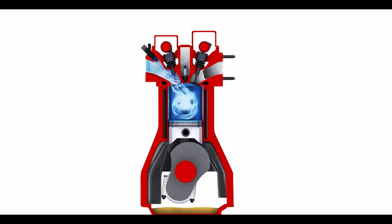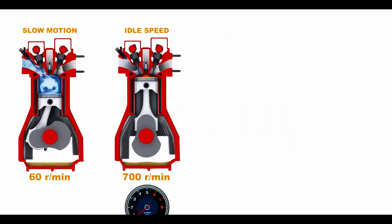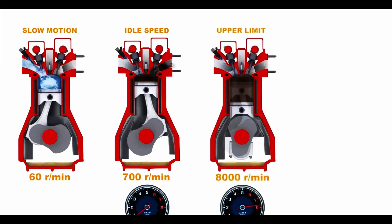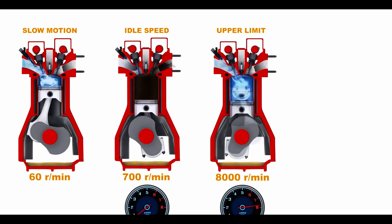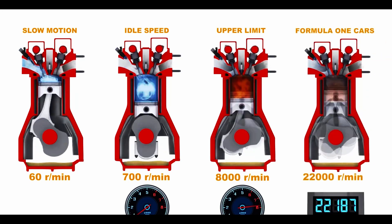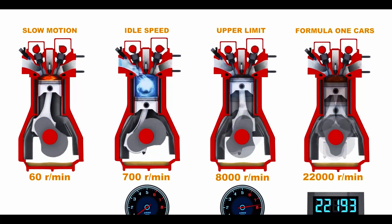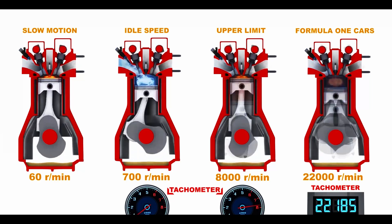Please keep in mind that we are watching the engine in slow motion. In fact, the crankshaft turns an average of 700 revolutions per minute at idle speed. The upper limit on production cars reaches 8,000 revolutions per minute. Engine speeds in Formula One cars can get as high as 22,000 revolutions per minute. You can check the RPM value on an instrument called a tachometer on your car's dashboard.